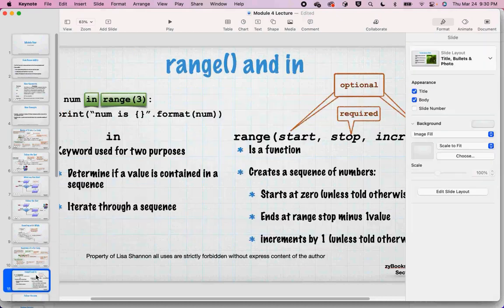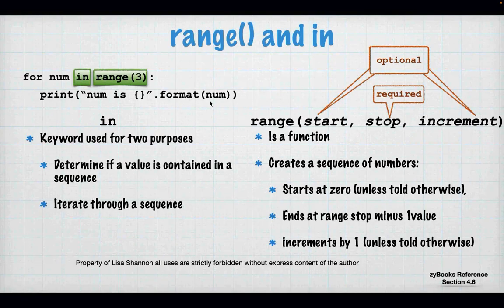Range is a function provided by Python that creates a sequence for you. You have a start, a stop, and an increment. The only thing you have to have in a range is the stop place — start is always assumed to be zero and increment is always assumed to be one unless you tell it differently. When I say `range(3)`, I'm saying: start at zero, increment by one, as long as I'm less than three. You can even do range to go backwards.